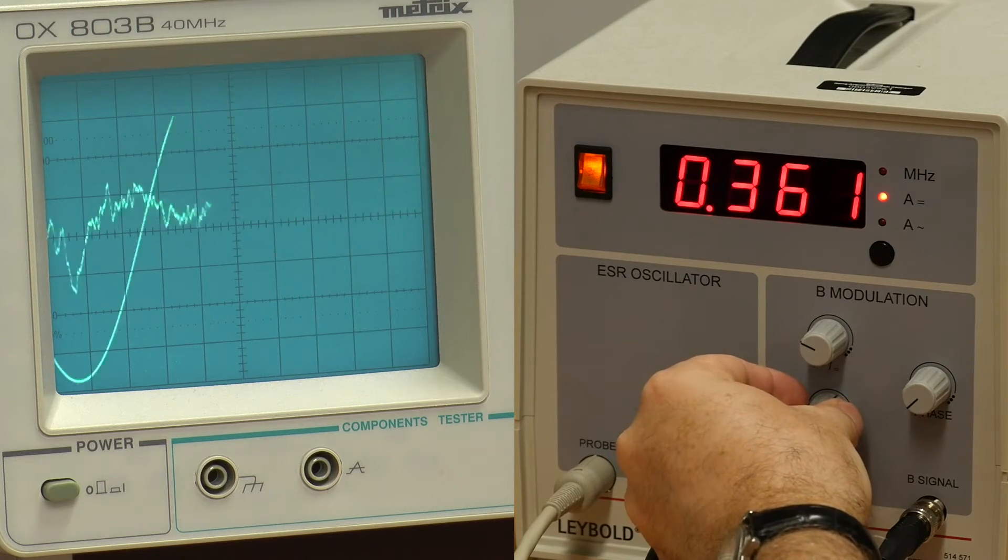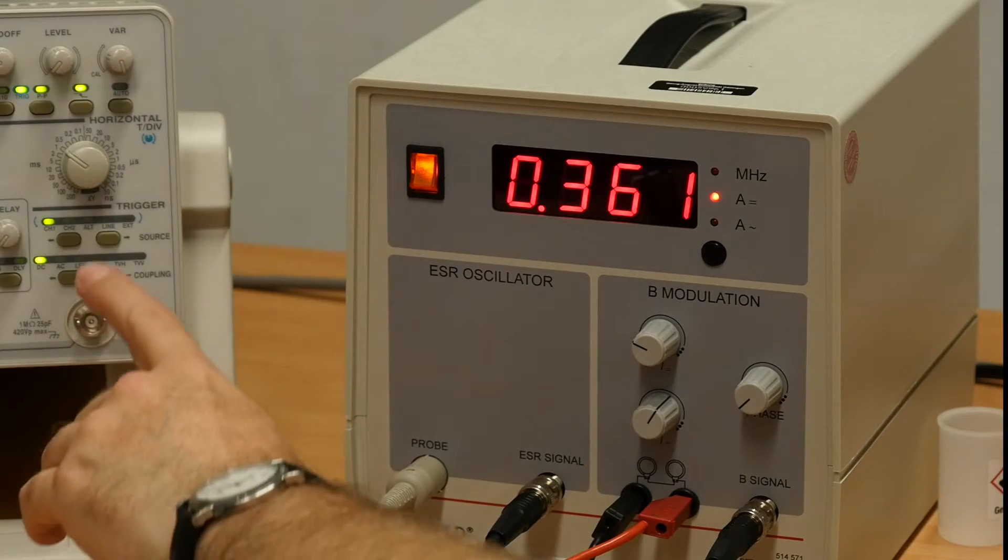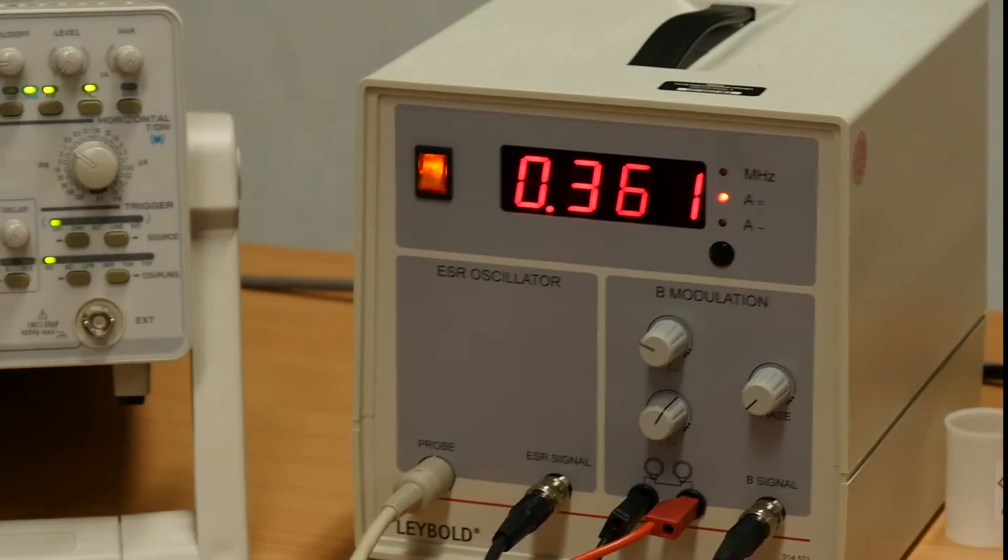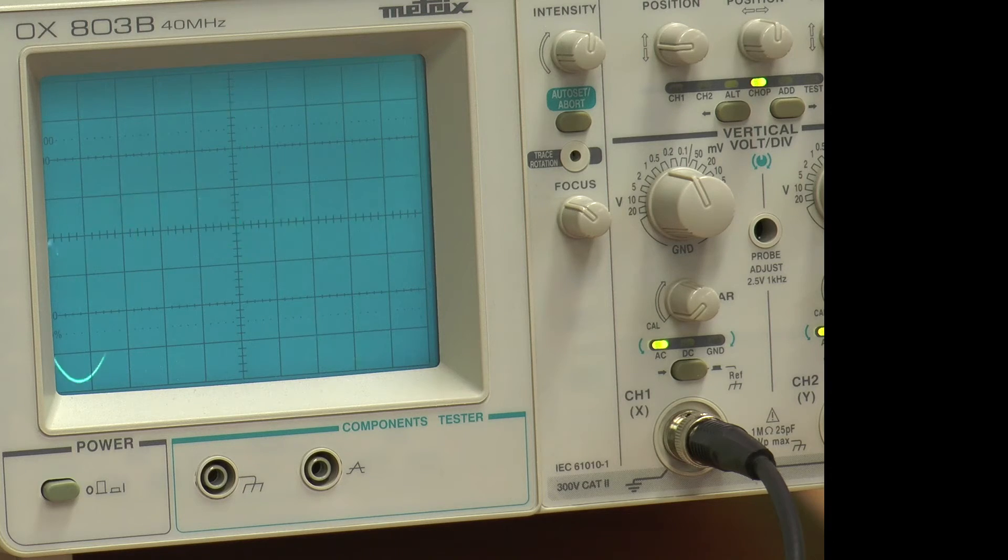With the oscilloscope in XY mode, adjust the phase shift so that both minima overlap in the X direction. Adjust the DC current through the Helmholtz coil so that the signal is symmetric.